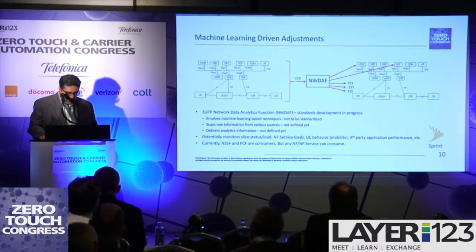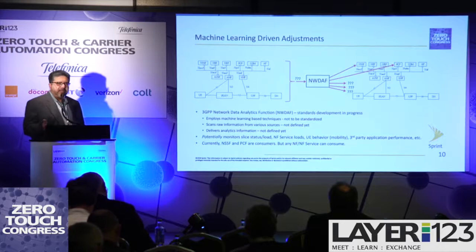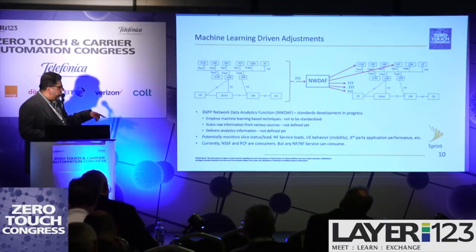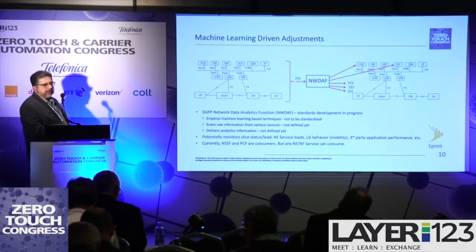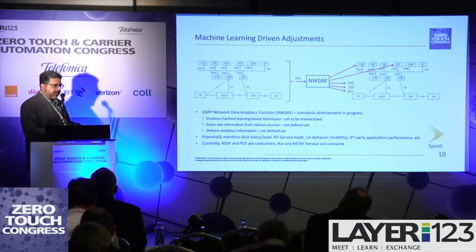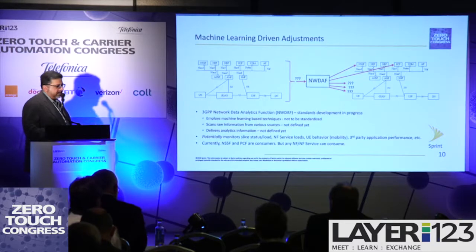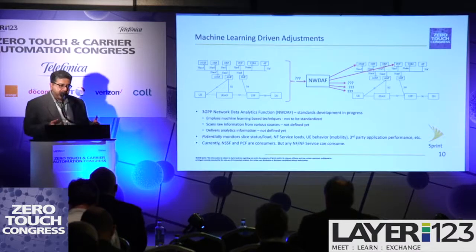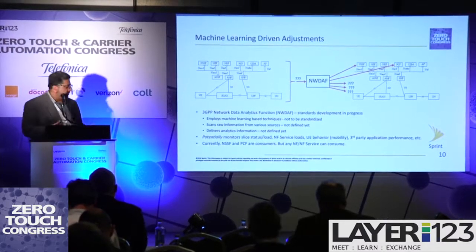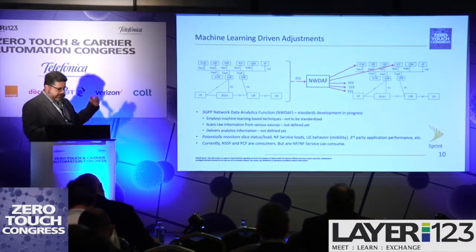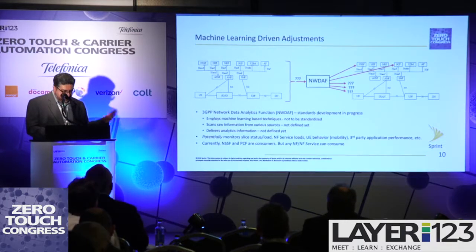There are proposals coming in right now. The first version of 5G — Release 15 — will soon be complete, mid this year. In that we've identified two consumers: the network slice selection function and the policy function, but really anything else is also open to be a consumer. As Release 16 is happening now, various proposals are coming in — you could potentially monitor the load status of a network slice or particular service, look at behavior of mobile devices like how mobile they are and where they're moving, and even look at third-party application performance and make adjustments. It should be a pretty interesting place for innovation once the framework is standardized.